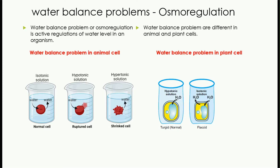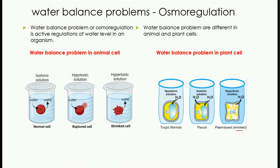In an isotonic solution, the movement of water molecules going in and going out is the same, so the plant cell is present in a flaccid form. In the case of a hypertonic solution, low water potential is present outside, so water from inside the cell will start moving outside. As water moves out, the water potential inside the cell decreases, causing shrinkage of the cell — in other words, plasmolysis of the cell takes place. That was all about water balance problems that animal cells and plant cells face.